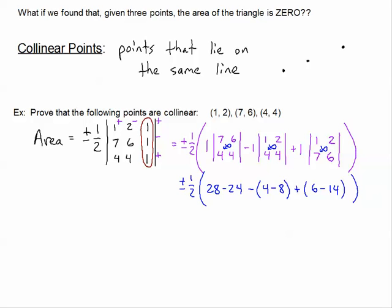Now again I know that this is ultimately going to turn into zero. But let's make sure that our math is actually working correctly so that we can prove this. So let's combine these products. Twenty-eight minus twenty-four of course is four. Minus, four minus eight is negative four. Plus, six minus fourteen is negative eight.